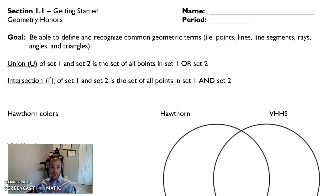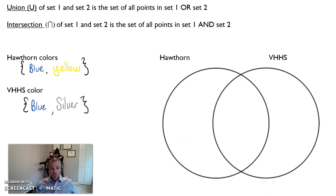So a couple of quick examples here. We think about the colors at Hawthorne, the colors at Vernon Hills. Hawthorne we have blue and yellow. And Vernon Hills we have blue and silver. So we could represent this using a Venn diagram where we have both of these have blue. Blue is the overlap. It's what there is in both. It's the and so that would be representing the intersection of these two sets. And we would put blue in that intersection part.